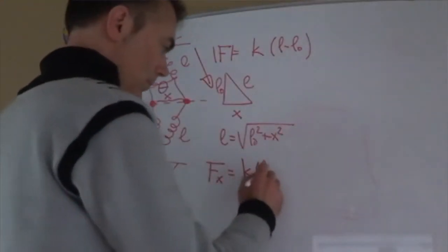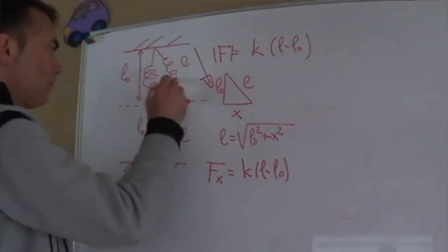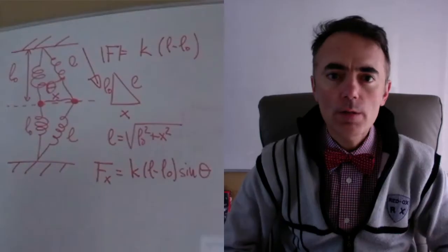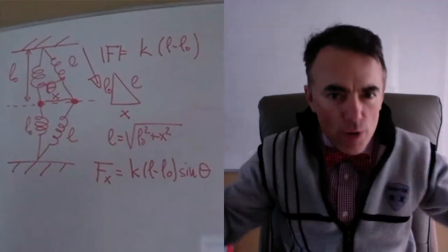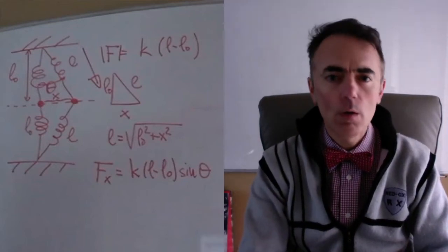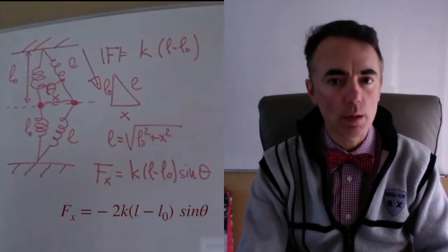To project in the x and y axis, we write minus K(L minus L0) times the sine of theta. This is the force from each spring. Because both will be extended, stretched, forces from both springs point in the same direction. So the total x axis force is minus 2K(L minus L0) sine of theta.